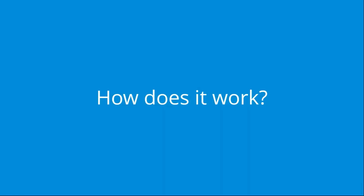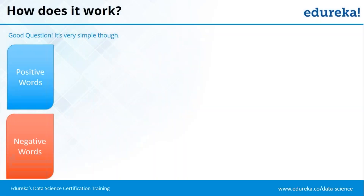Now that we know what sentiment analysis is, how does it work? It's actually pretty simple. You have two kinds of words: a list of positive words and a list of negative words. There's also a third kind — neutral or stop words. The words not in either list are neutral. Positive and negative word lists are your database. A statement is matched against both datasets, broken down into individual words, and each word is compared against the positive and negative word lists.